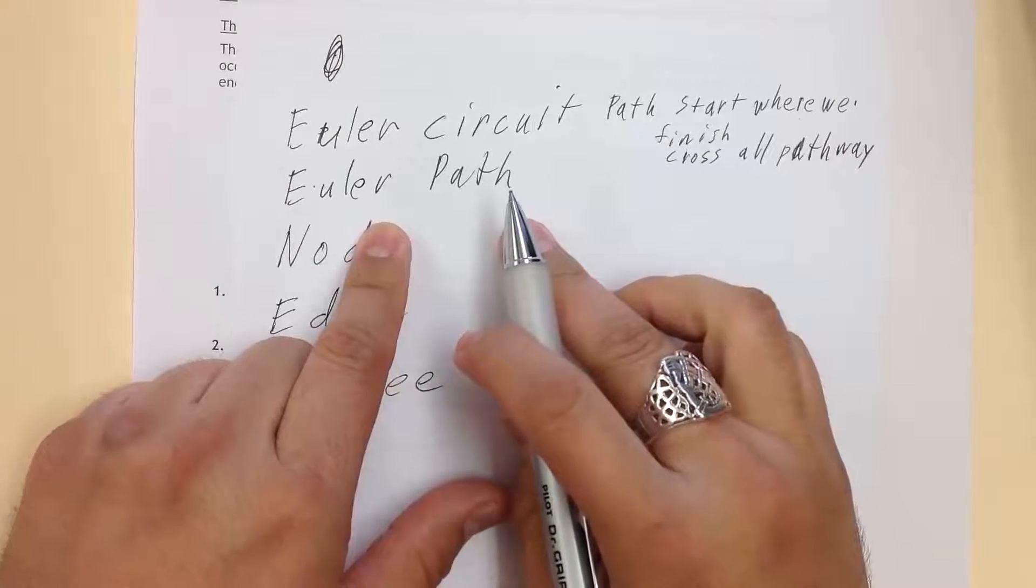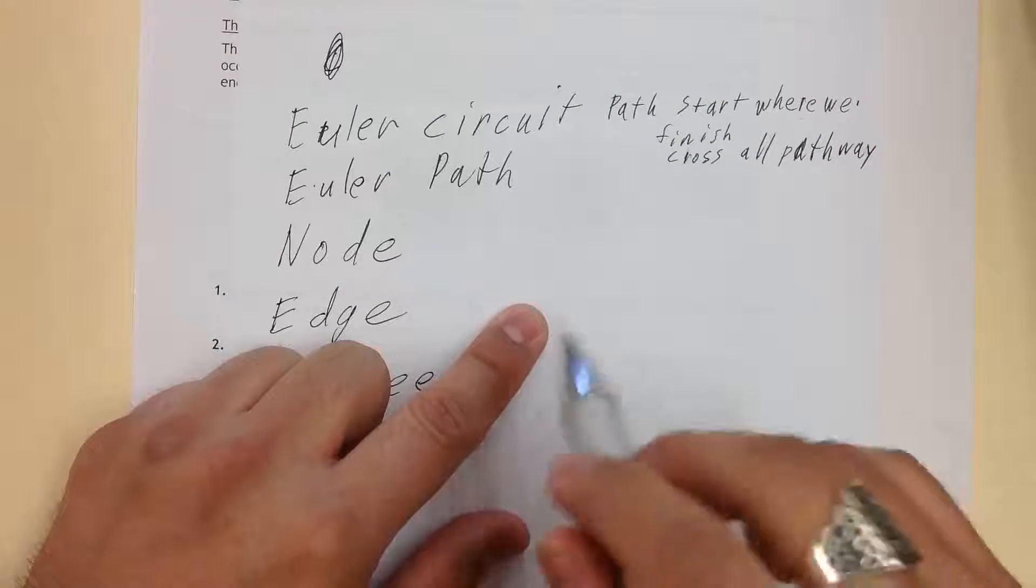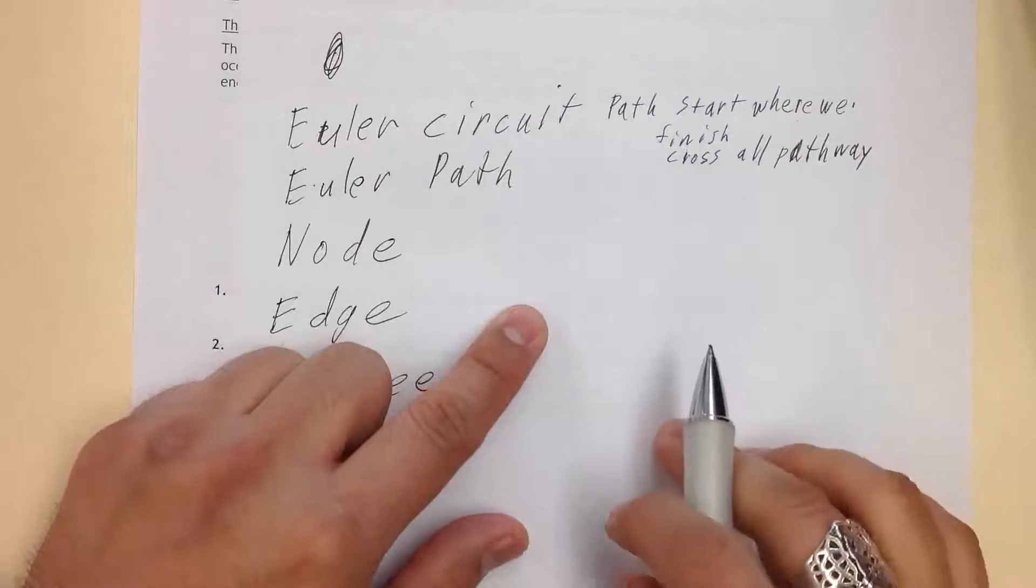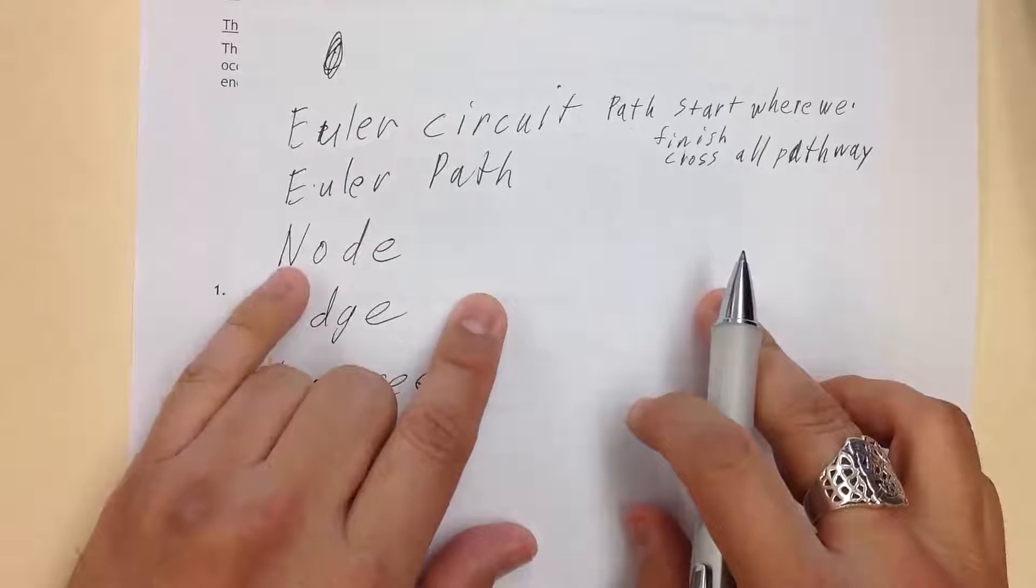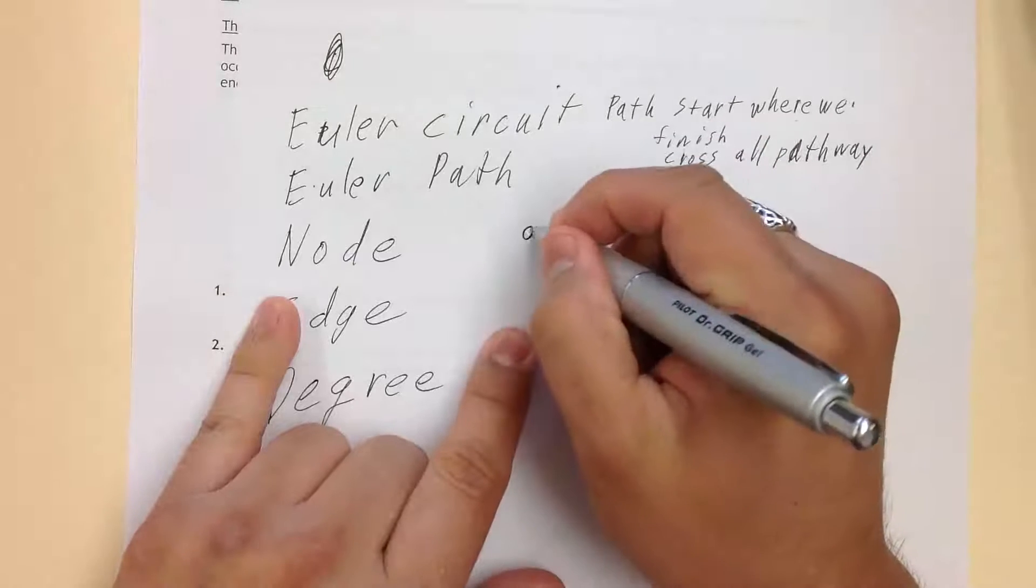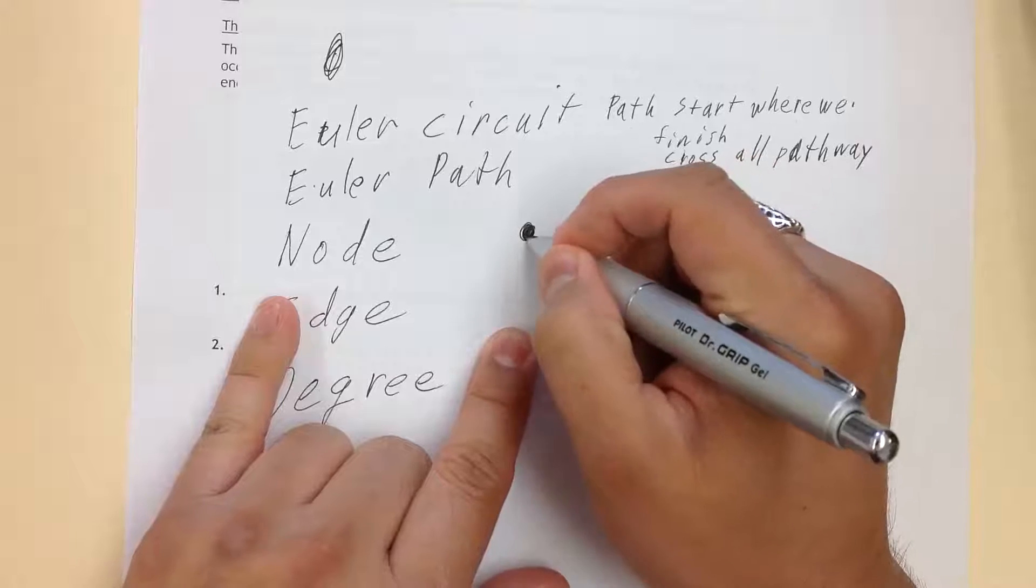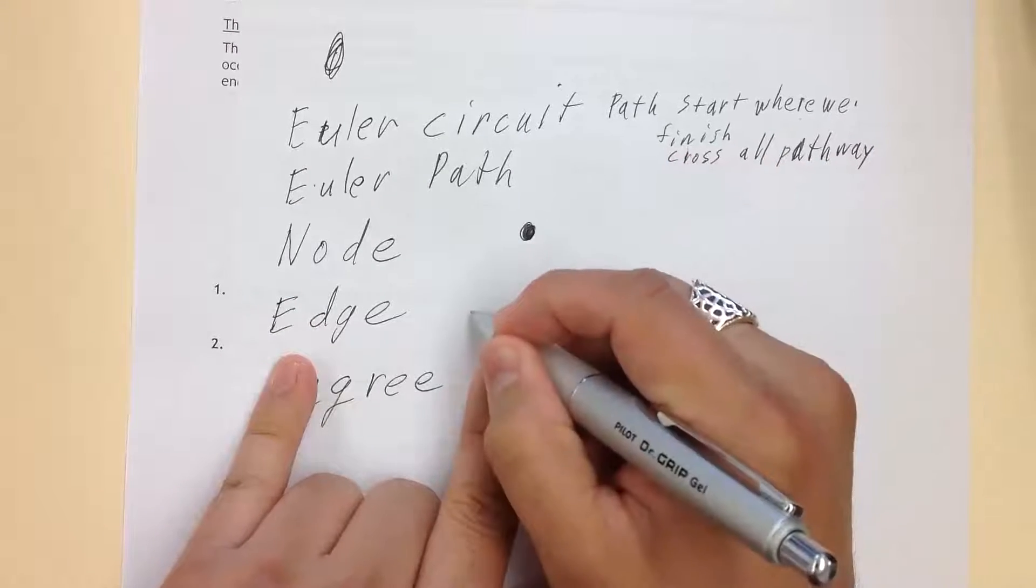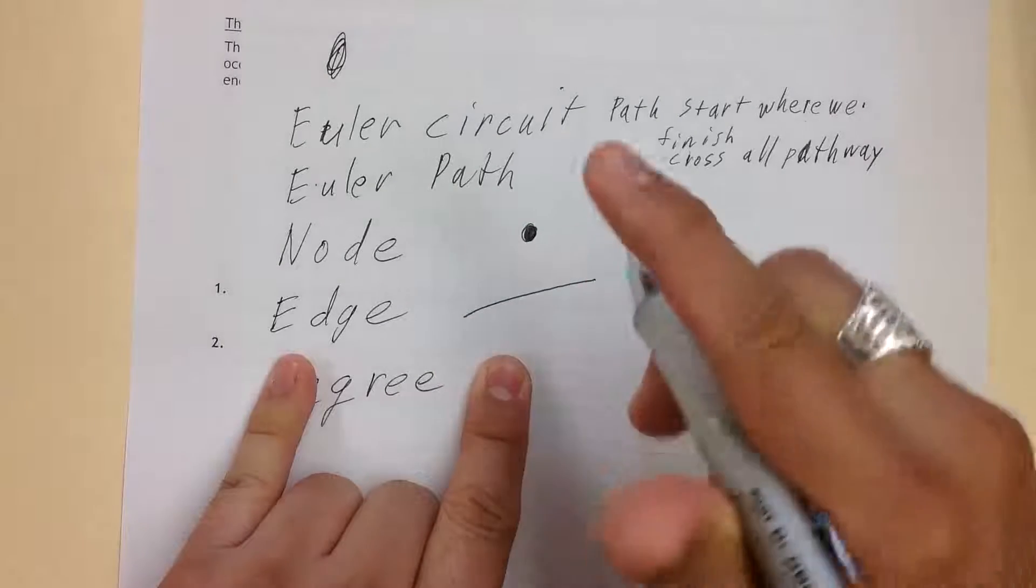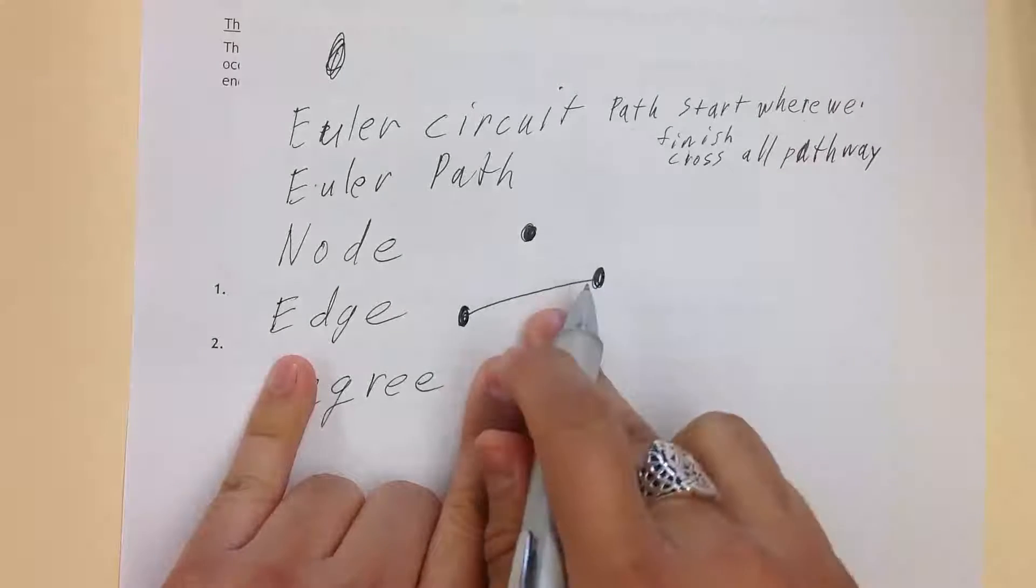Next one is called an Euler path. That's something where we start and end at two different points, but we've crossed all the edges, all the paths. We have node, which represents a position on the map or where we're going to be at. It's just a dot. An edge is something like this, connects nodes together. It represents a pathway.